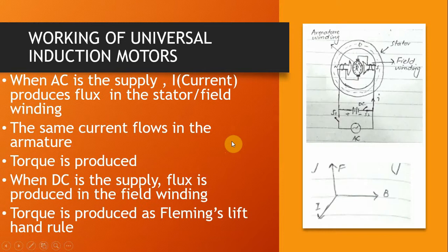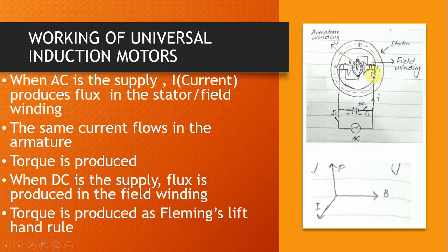When AC supply is provided to this motor, the current produces a flux in the stator and the field winding. This current also flows in the armature simultaneously, and due to this the torque is produced.